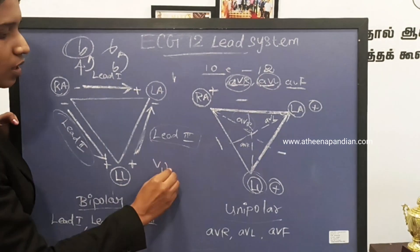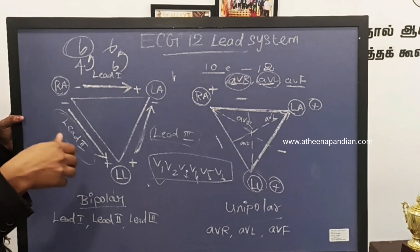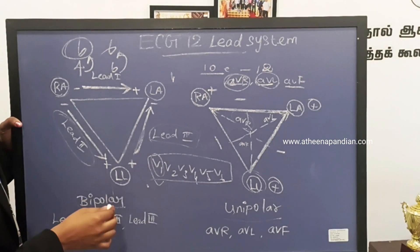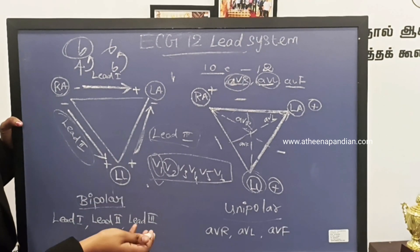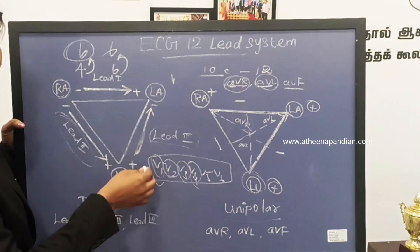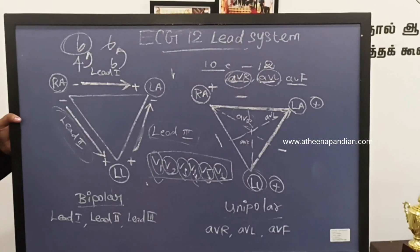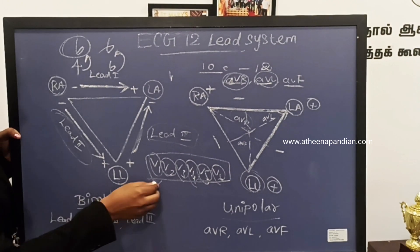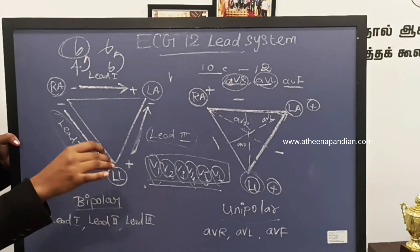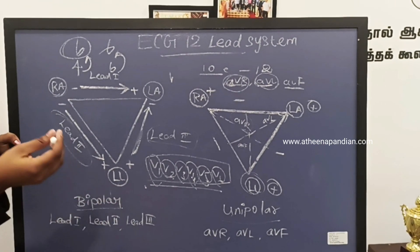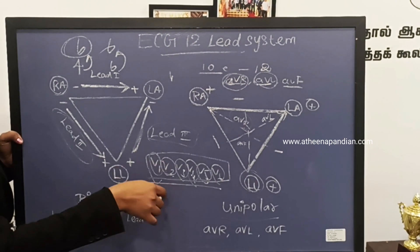The chest electrodes are V1, V2, V3, V4, V5, and V6. These six chest electrodes are placed in different regions of the heart. V1 is placed in the fourth intercostal space, right sternum. V2 is placed in the fourth intercostal space, left sternum. V3 is placed between V2 and V4. V4 is placed in the mid-clavicular line. V5 is placed in the anterior axillary line, and V6 is placed in the mid-axillary line. These six chest electrodes are unipolar electrodes, each as a positive pole, with the negative pole calculated as an average of the three limb electrodes.